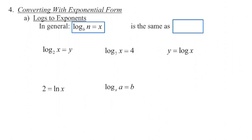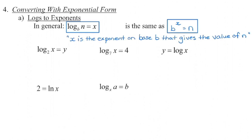We have to be able to take a logarithmic equation and convert it into an exponential equation. If we see something like log base B of N equals x, we're going to read this as: x is the exponent on base B that gives us the value of N. Remember, logarithm means exponent — that's your key point. So for our first example: y is the exponent on base 2 that gives us the value of x, giving us 2 to the power of y equals x.